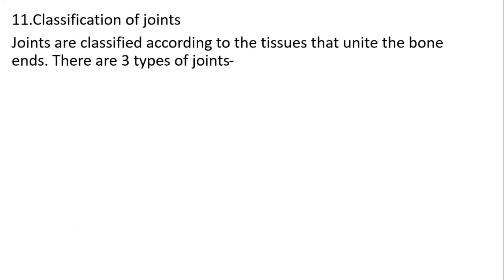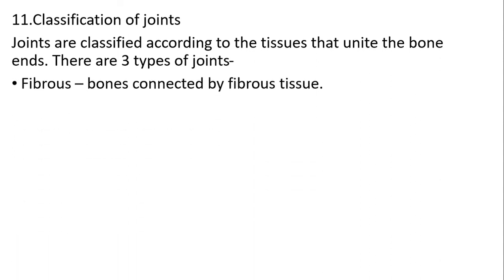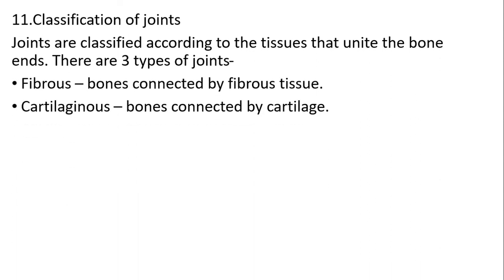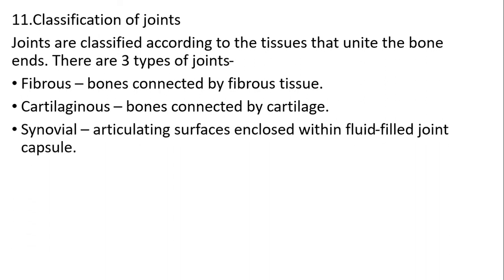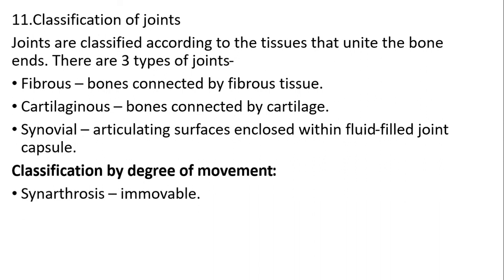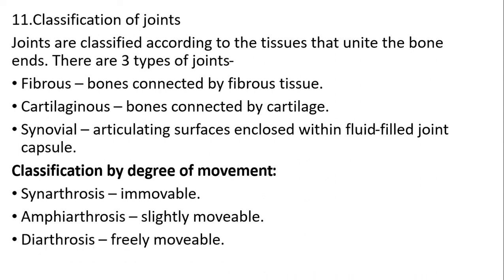Eleventh question: classification of joints. Joints are classified into three types by structure: fibrous, where bones are connected with fibrous tissue; cartilaginous, where bones are connected by cartilage; and synovial, where the articulating surface is enclosed within a fluid-filled joint capsule. Classification by degree of movement: synarthrosis — immobile; amphiarthrosis — slightly movable; diarthrosis — freely movable.